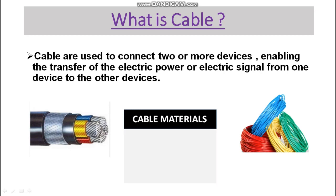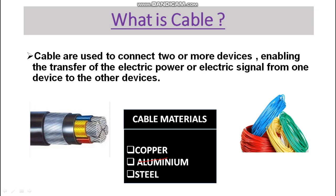If we talk about the materials used to make the cable, these are copper, aluminum, and steel — ACSR conductor, which is generally used in transmission lines. So there is also use of steel. These are the materials used in cable manufacturing. The most expensive material is copper and it has the highest conductivity among these materials.